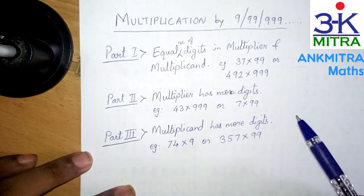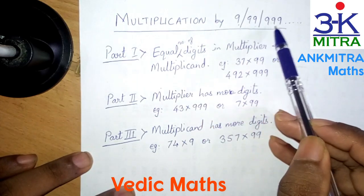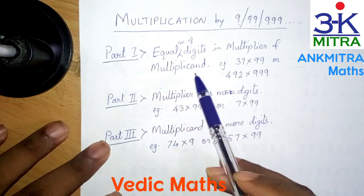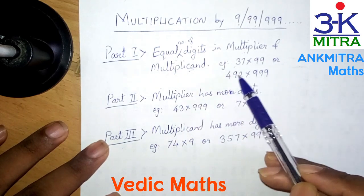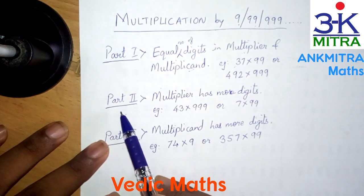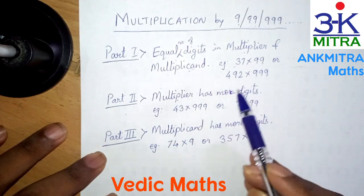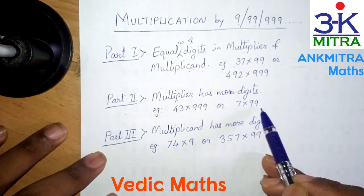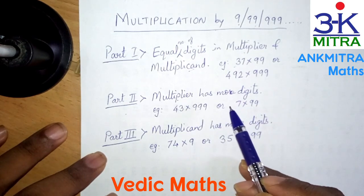Hello everyone. In my first video on Vedic Maths multiplication trick for multiplication by 9, 99, 999 and so on, I had focused on Part 1 where the multiplicand as well as the multiplier had equal number of digits — a 2-digit number multiplied by 99, or a 3-digit number multiplied by 999, and so on. In this video, I will be focusing on Part 2 where the multiplier has more number of digits — a 2-digit number multiplied by 999 or 9999, or a single digit number multiplied by 99, or a 3-digit number multiplied by 9999 and so on.